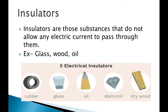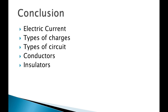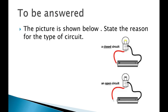So what we have studied: what is current, types of charges, types of circuits, conductors, and insulators. The next question for you: you have a picture — you have to identify which circuit is shown, closed or open, and justify why. Please copy all the contents carefully, word to word, and match spellings properly. That's all for today — thank you and have a nice day.